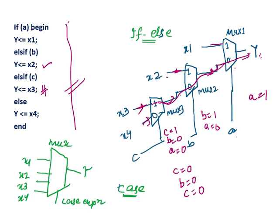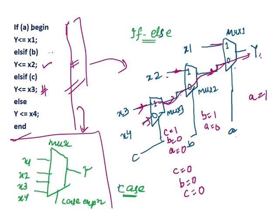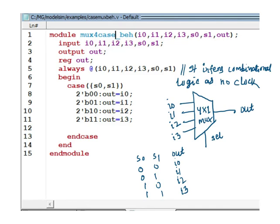But if you have written the same logic with a case statement, then the case statement also involves a multiplexer. For if-else, this is the respective hardware. And if you implement this logic with case statement, then this is the hardware — it is a 4-to-1 multiplexer. This is the case expression: a, b, c. And these are the inputs: x1, x2, x3, and x4. This is the hardware for case statement, and this is the hardware for if-else statement. Then this is a MUX 4-to-1. This is behavioral, and I have used case statement.